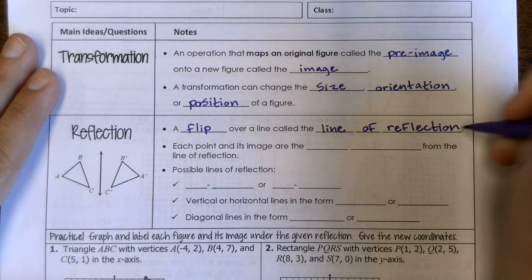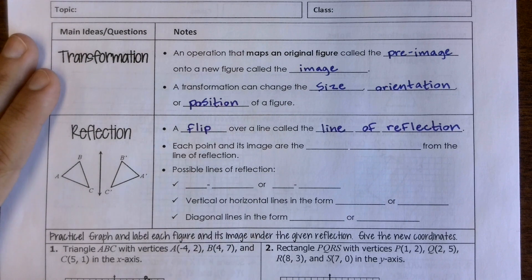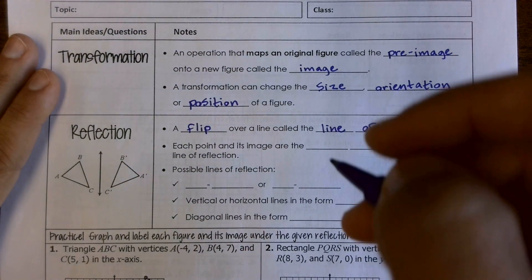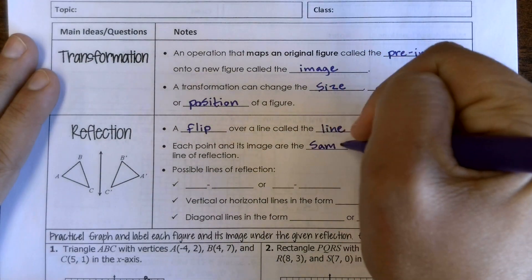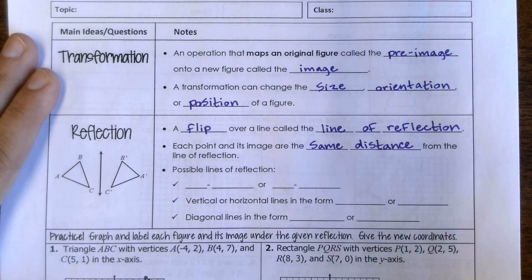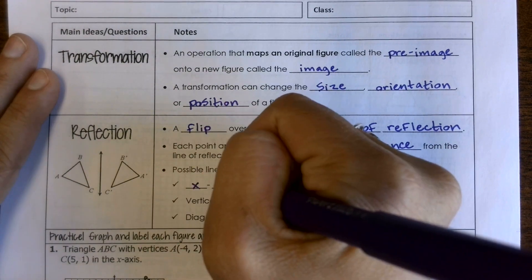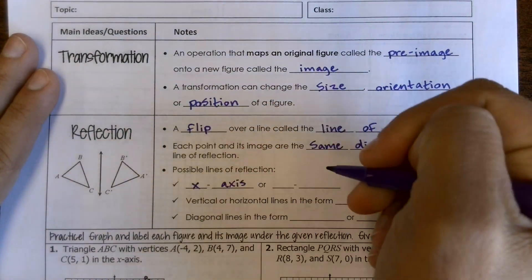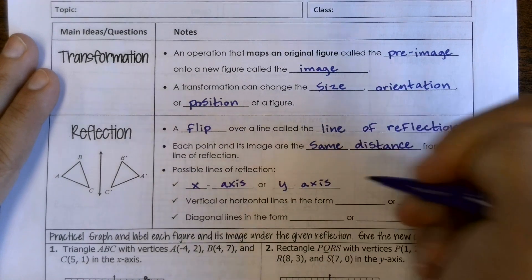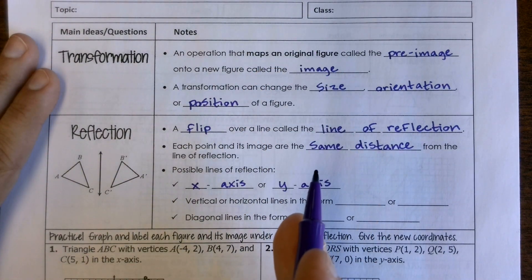You might also hear it called the line of symmetry, and each point and its pre-image end up being equidistant or the same distance from the line of reflection. Your possible lines of reflection really could be any line, but typically we're going to be dealing with the x-axis or y-axis. You could have it flipped over a vertical or horizontal line, so recall vertical lines, since they can't be written in that y equals mx plus b,